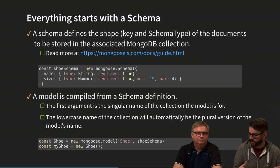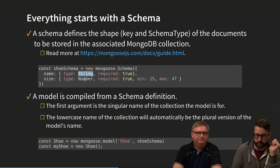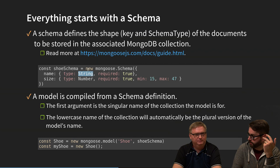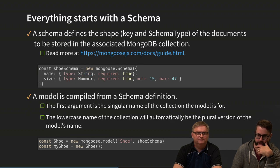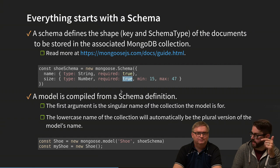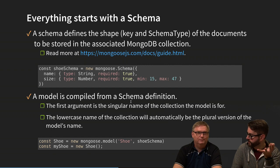The types you can use in a Mongoose schema are the same as in JSON: string, number, boolean, object, and date. For each property you specify the type. You can also specify validation rules like min and max for a number, or required. The validation is handled by Mongoose, so we don't need a lot of if statements to check this ourselves.